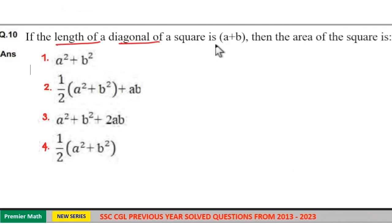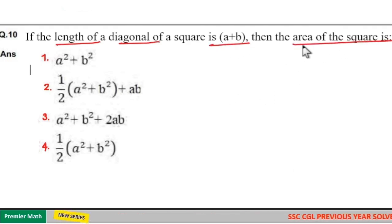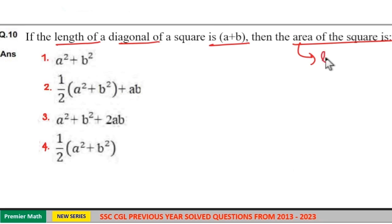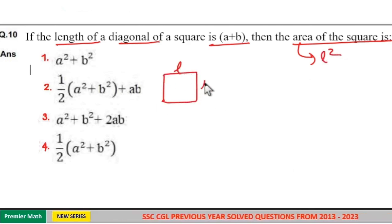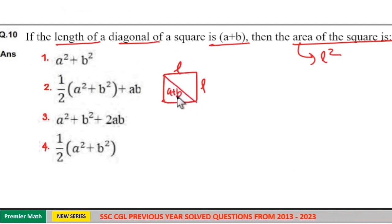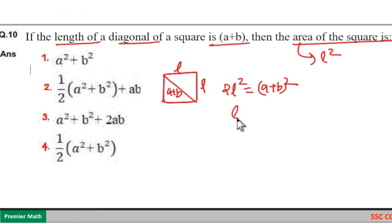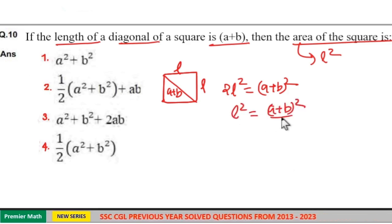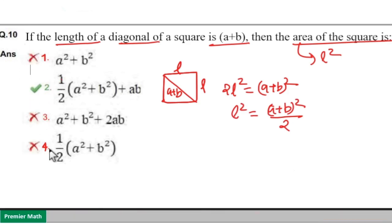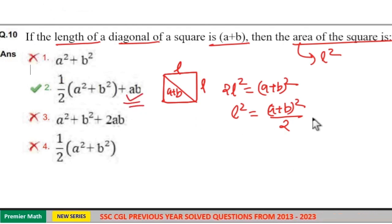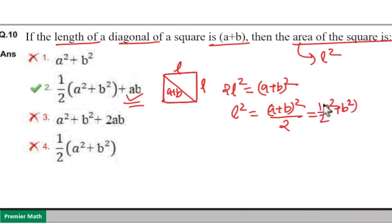If the length of diagonal of a square is (a plus b), then the area of the square is: consider side length as l, then area equals l squared. From the right triangle, 2l squared equals (a plus b) whole squared. So l squared equals (a plus b) whole squared divided by 2. Expanding: this becomes half of (a squared plus b squared plus 2ab), which equals (a squared plus b squared) by 2 plus ab. Option 2 is your answer.